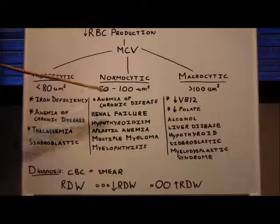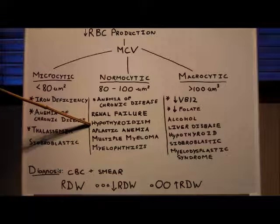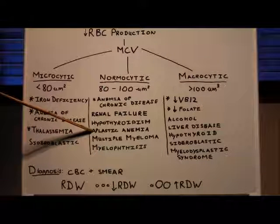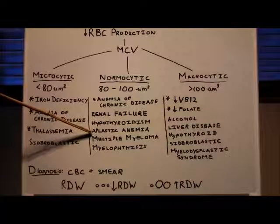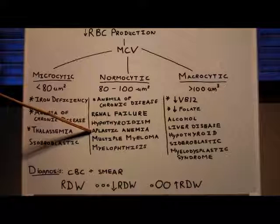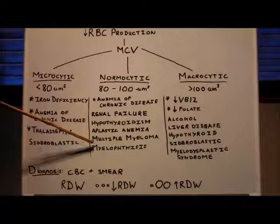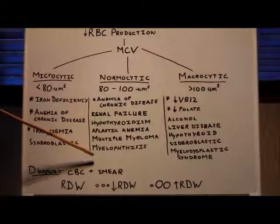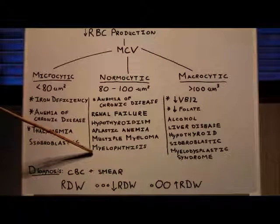The normocytic anemias include anemia of chronic disease once again, renal failure - people who have problems with their kidneys - hypothyroidism, which is a decrease in thyroid hormone, and aplastic anemia. Aplastic anemia is a failure of the bone marrow. This is seen in people who have received radiation or chemotherapy. Their bone marrow just isn't working. They often have decreased in all three cell counts: red blood cells, white blood cells, and platelets. Their reticulocyte count is often zero. Multiple myeloma is a cancer of the plasma cells, and anemia is often seen in multiple myeloma. Myelophthisis is infiltration of the bone marrow. Things like tumors can infiltrate the bone marrow, and the bone marrow doesn't work properly and won't produce cells. Again, you may see a pancytopenia, which is a decrease in red blood cells, platelets, and white blood cells.